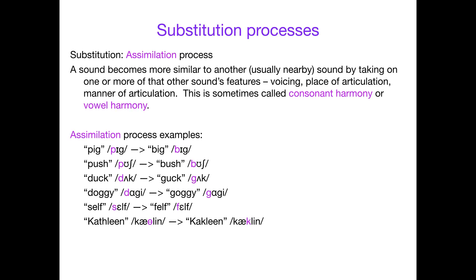The last process is the most complex — assimilation, the most free-form of substitution processes. The name means 'become more similar', and that is the basic idea: a sound becomes more similar to another usually nearby sound by taking on one or more of that other sound's features. Remember there are three core features: voicing (voiced or voiceless), place of articulation (labial, interdental, alveolar, post-alveolar, velar, etc.), and manner of articulation (stop, fricative, nasal, glide, liquid, etc.). When consonants assimilate to consonants it's called consonant harmony; vowels to vowels is vowel harmony.